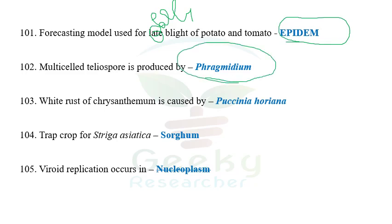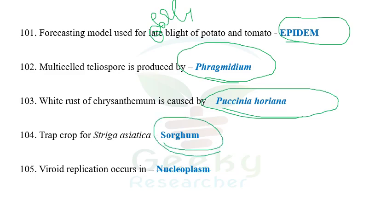The next question: multi-celled teliospores are produced by Phragmidium. Regarding types of teliospores — single-celled, double-celled, multi-celled — please go through the related video. The next question: white rust of chrysanthemum is caused by Puccinia horiana. The next question: trap crop for Striga asiatica is sorghum.